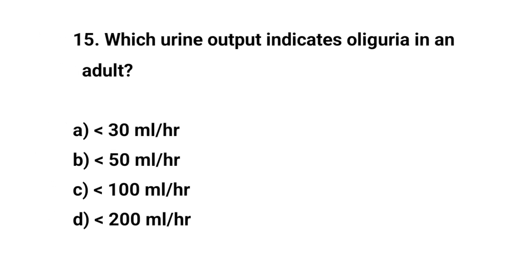Question No. 15. Which urine output indicates oliguria in an adult? Right answer is A. Less than 30 ml per hour.